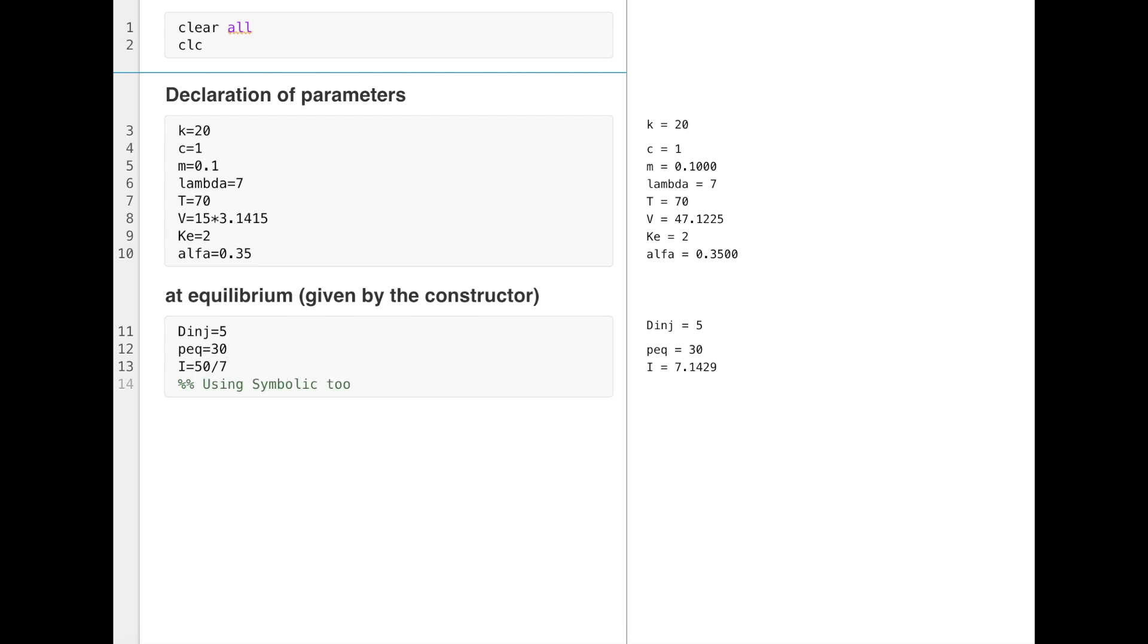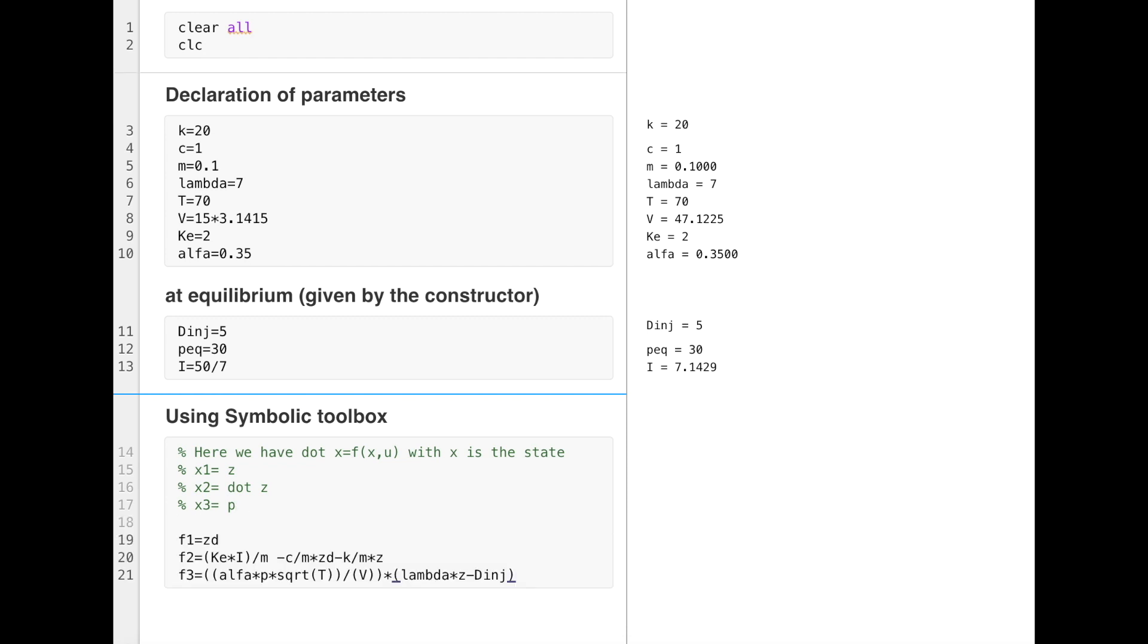Here the tutorial is how to use symbolic toolbox to find the equilibrium point. We have a nonlinear system x_dot equal f(x,u) where x is the state. x1 is the position z, x2 is z_dot or the derivative of z, and x3 is the pressure p.